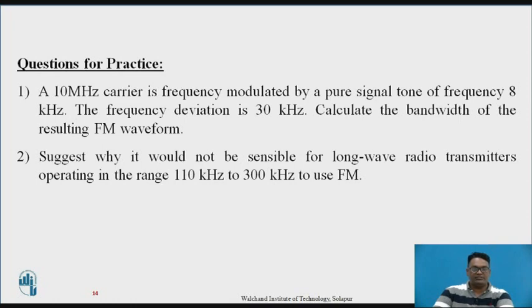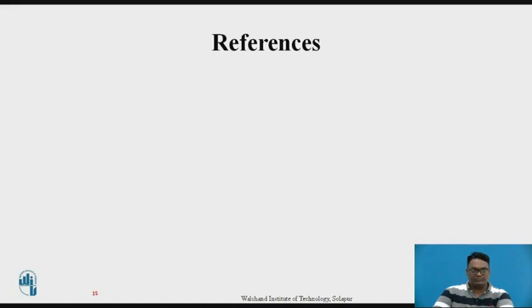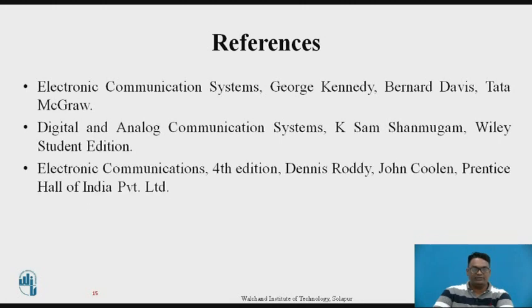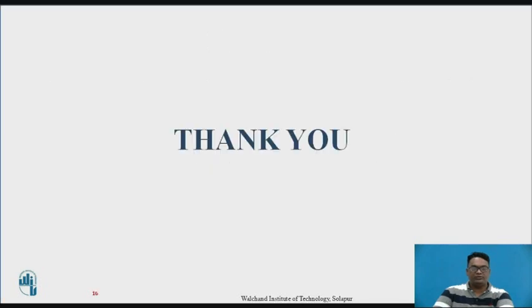Here are some practice examples: a carrier of 10 MHz has a frequency modulated signal of 8 kHz with a deviation of 30 kHz. A second question asks why it would not be sensible for long wave radio transmitters operating in the range of 110 kHz to 300 kHz to use FM — for this, revise the previous slides and find the answer with reasoning. These are some of the references used for making this presentation. Thank you for watching the video.